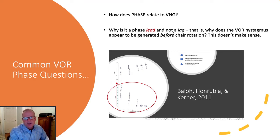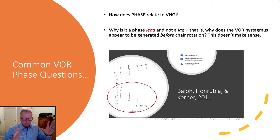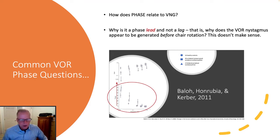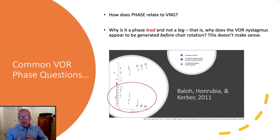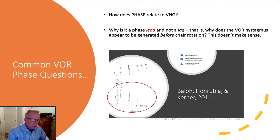Secondly, why is it a phase lead and not a phase lag? It's not a mysterious premonition of the eyes to move before the chair. The simple answer is that it's a byproduct of how we actually plot the data. We plot eye velocity data because we plot the chair data in velocity as well — so we plot velocity against velocity. But we're always reminded that the cupula in the vestibular system responds to acceleration.